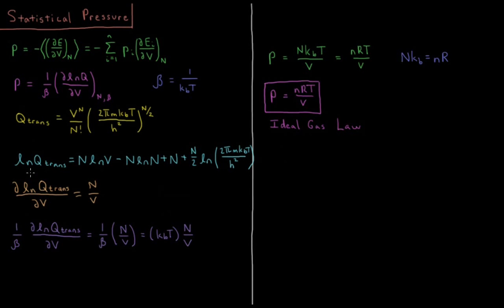If we take the natural log of this translational partition function, we can separate it into different terms. The natural log of A times B is the natural log of A plus B. Natural log of V to the N is N log V. So we have minus natural log of N factorial. The natural log of N factorial is N log N minus N, so the minus of that is N minus N log N. That's called Stirling's approximation. Then natural log of this is N over 2 log 2 pi MkT over H squared. I did it this way because I only care about terms that have volume dependence, because I'm taking a partial derivative with respect to volume.